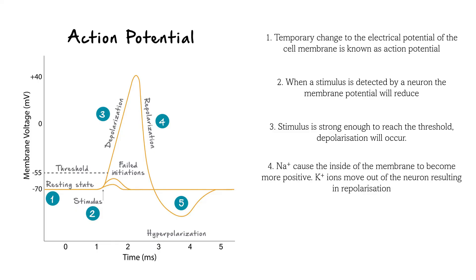To counteract this, potassium channels will open to allow potassium ions to move out of the cell — this is called repolarization. The potassium channels will stay open until the action potential returns to negative 70 millivolts.